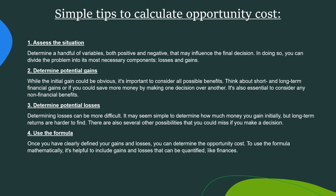Here are some simple tips to calculate opportunity cost. Number one: assess the situation. Determine a handful of variables, both positive and negative, that may influence the final decision. In doing so, you can divide the problem into its most necessary components — losses and gains. Number two: determine potential gains. While the initial gain could be obvious, it's important to consider all possible benefits. Think about short-term and long-term financial gains, or if you could save more money by making one decision over another.